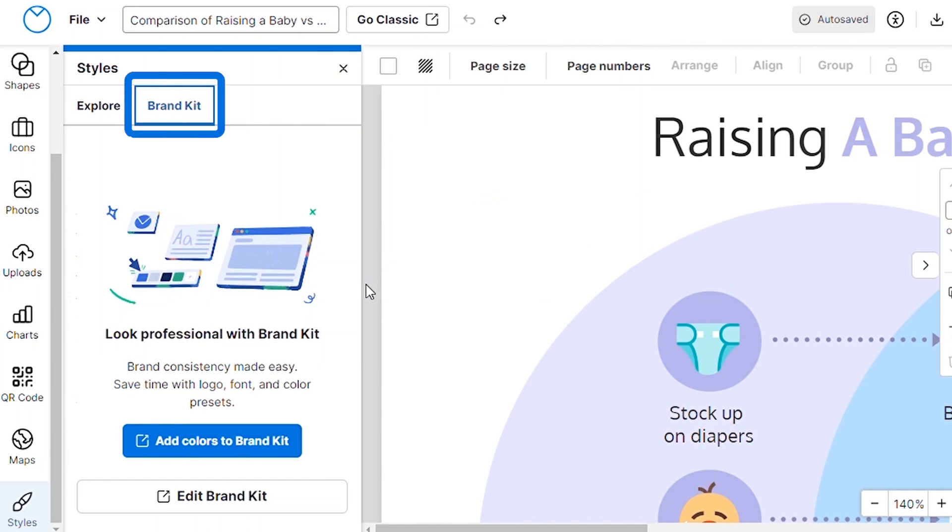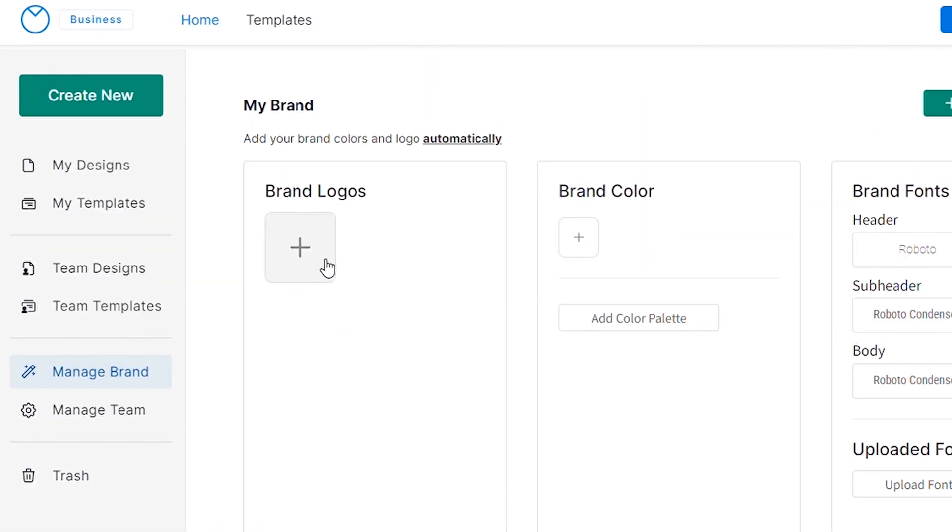Venngage also has a business feature called My Brand Kit that lets you add your company's logo, color palette, and fonts to your design with a single click.